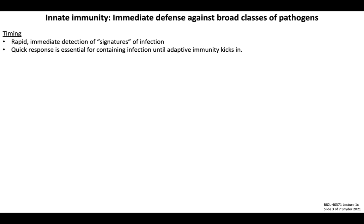Let's examine innate immunity, which I want you to associate with immediate defenses raised against broad classes of pathogens. Innate immunity enables the rapid detection of signatures of infection, including conserved molecular motifs found in pathogen-associated molecules as well as damage-associated molecules that can be released by infected host cells. The rapid detection and effector mechanisms of the innate immune response allow the host organism to contain infection by restricting pathogen replication, which holds the infection at bay until the adaptive immune system is activated.